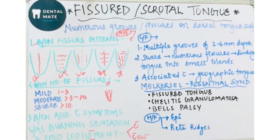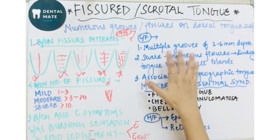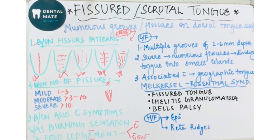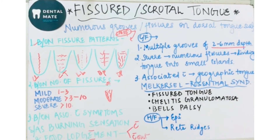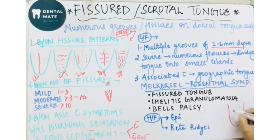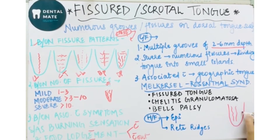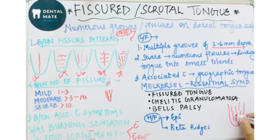Moving on to clinical features — there are numerous grooves or fissures, and their depth is 2 to 6 mm. In severe conditions, numerous fissures are visible on the tongue. As you can see in this image, there are many fissures present.